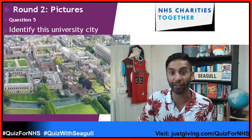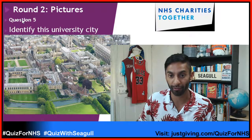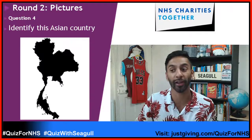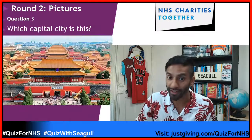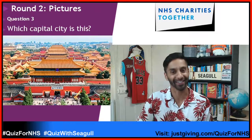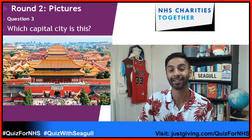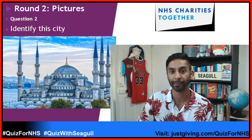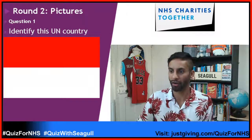Going backwards: question five — identify this university city. Question four — identify this Asian country. Question three — in which capital city is this? Question two — identify this city. And question number one — identify this UN country.